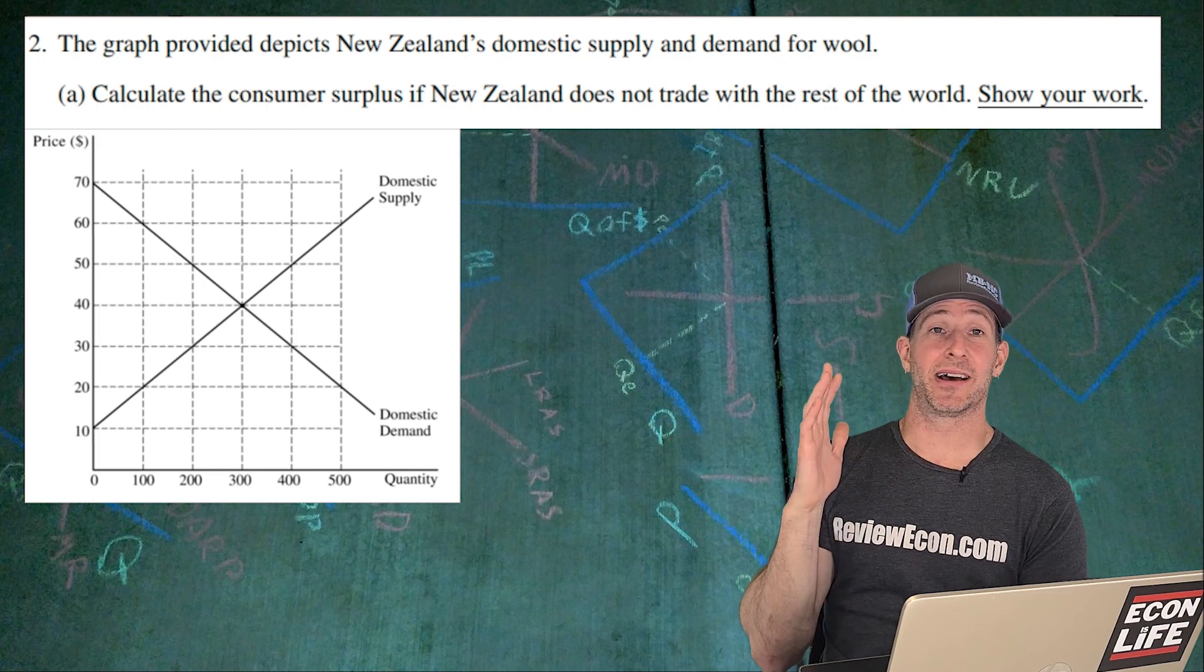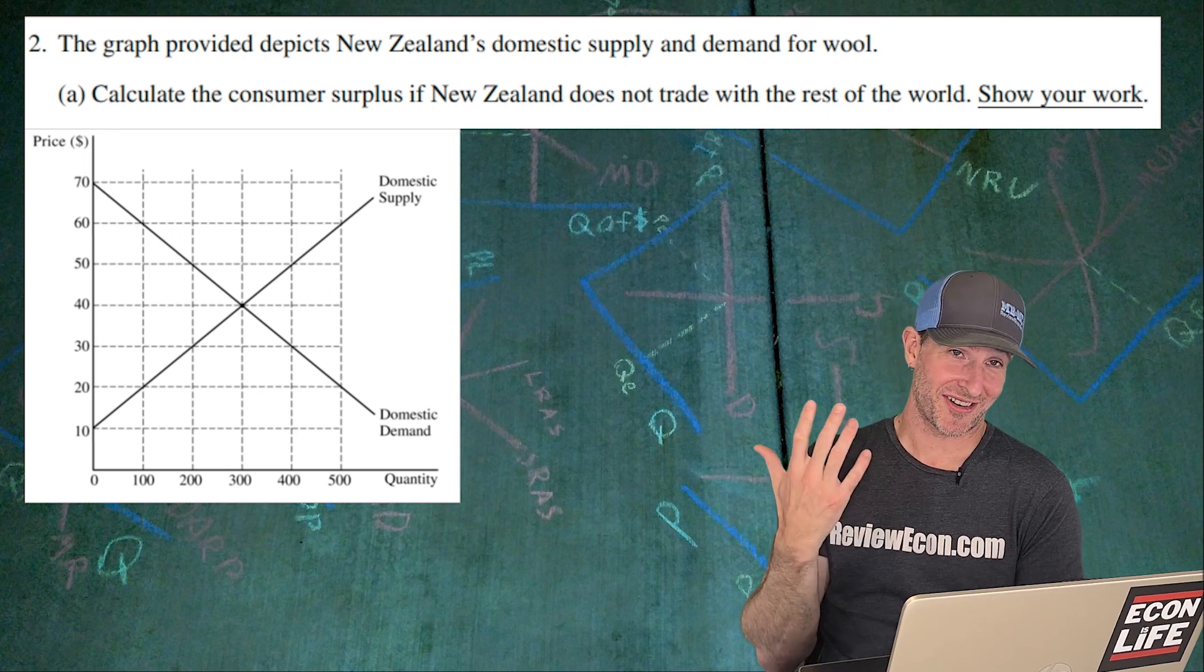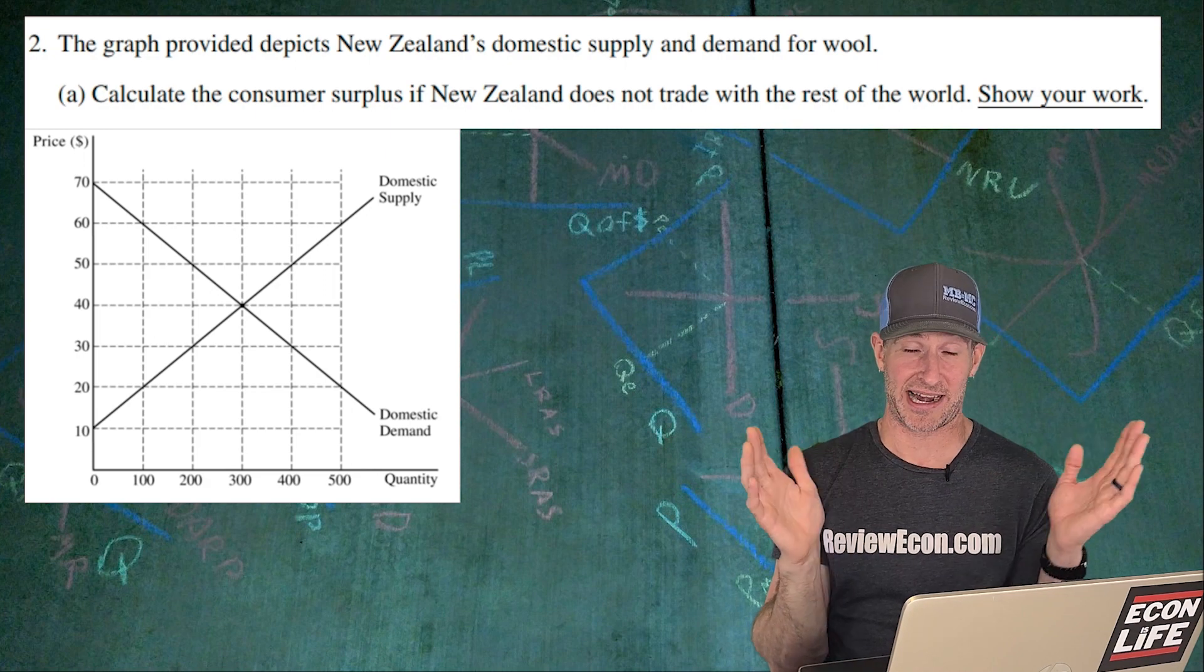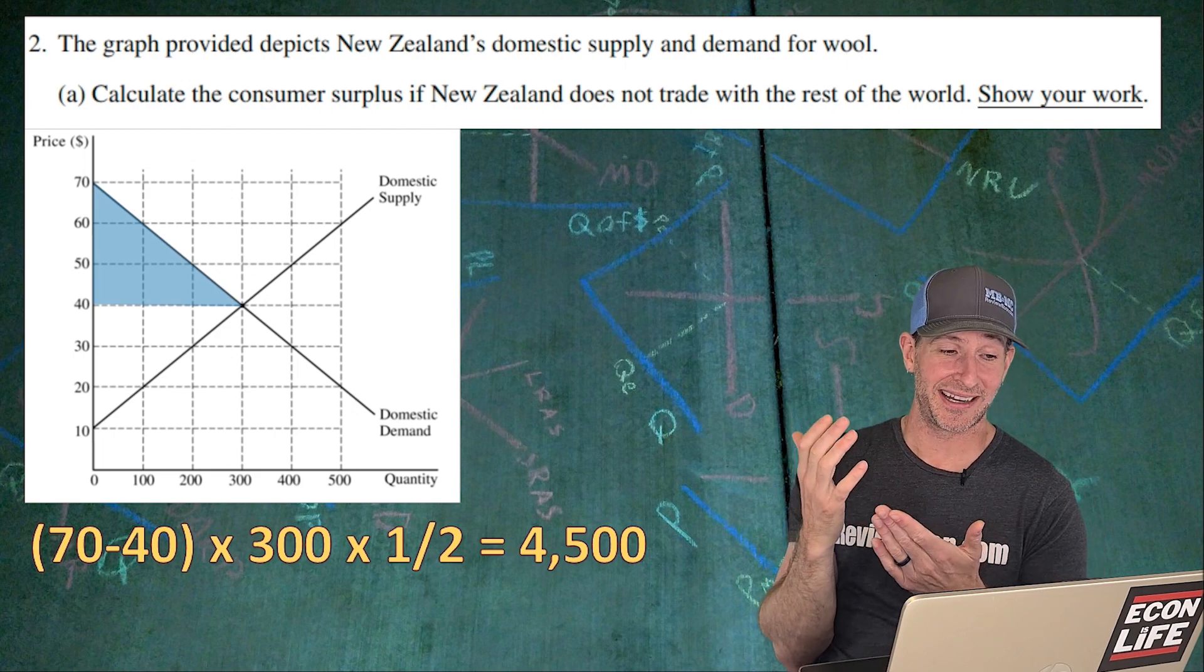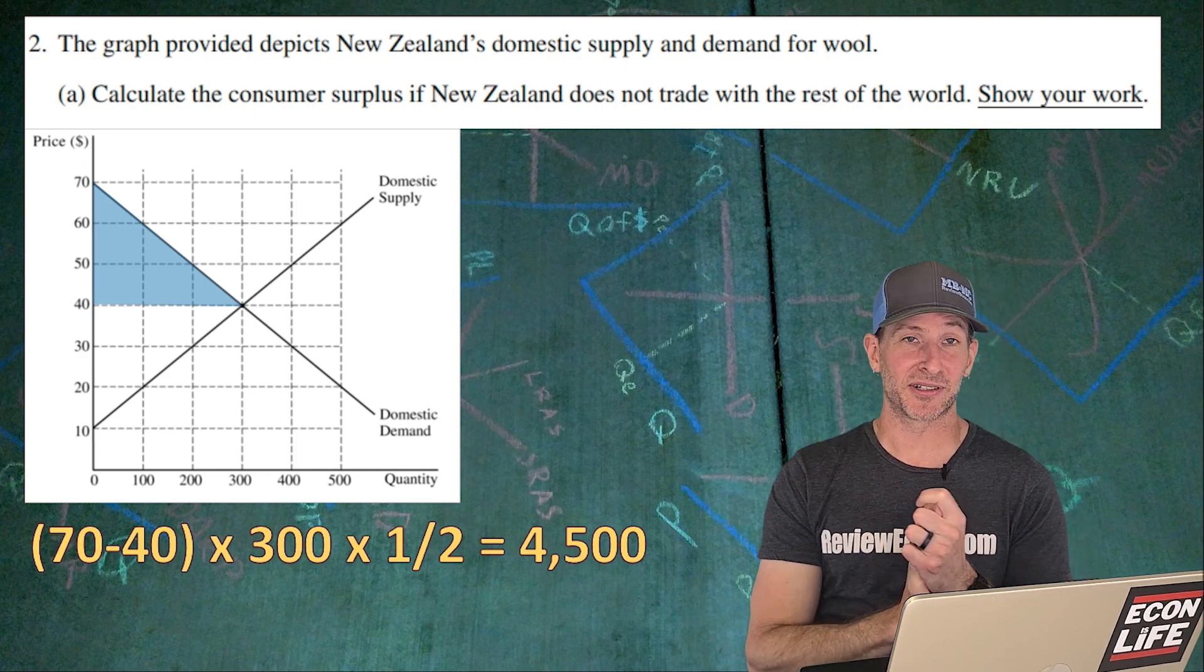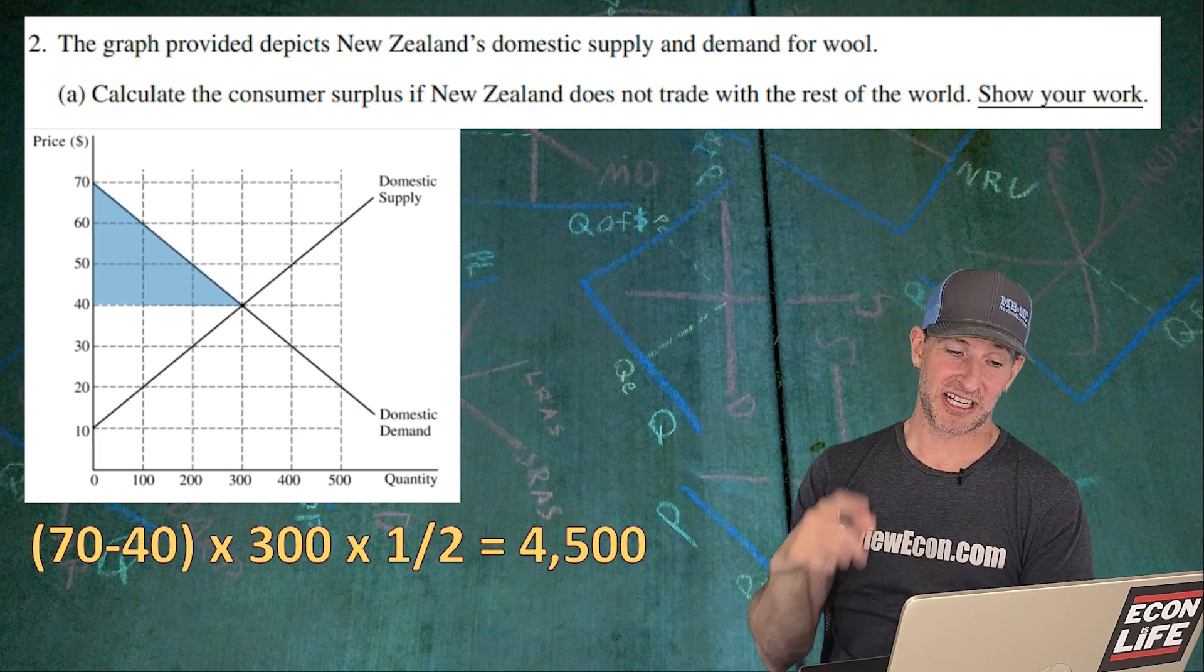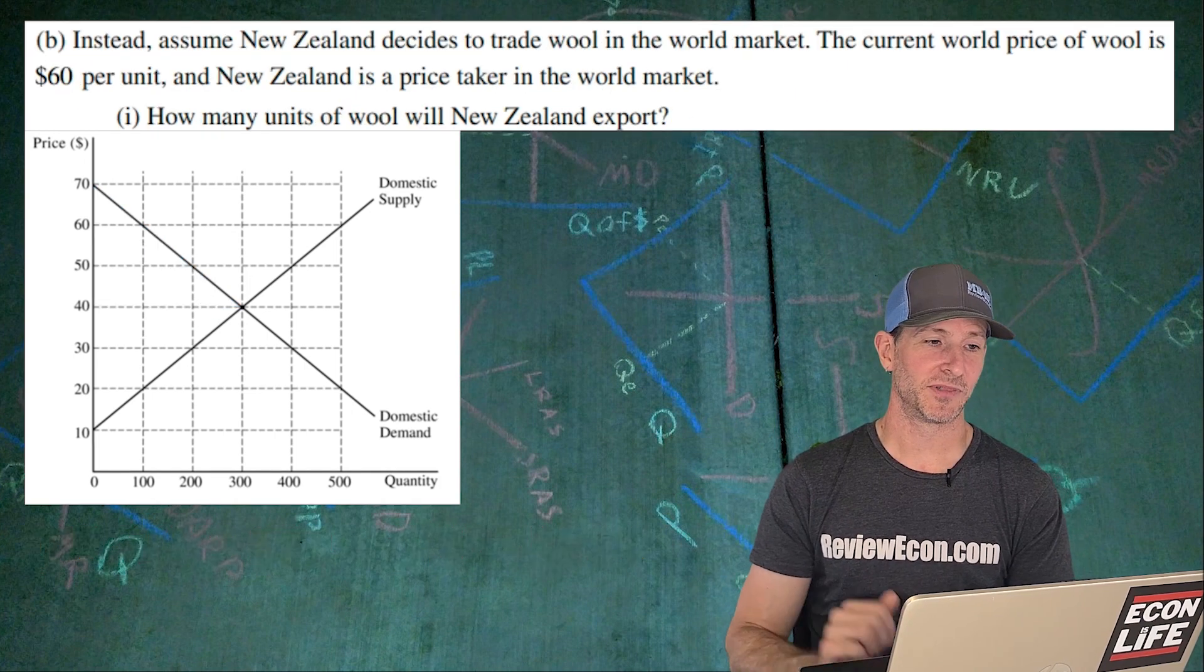On to the next part. D. And this was another curveball here, by the way. Hugely. They've never done anything like this one before. So again, this one was hard for me too, by the way. So we have this graph that depicts New Zealand's domestic supply and demand for wool. We're going to first calculate the consumer surplus if New Zealand doesn't trade at all. So hopefully you got this point. We have our consumer surplus is that triangle right there, the quantity of 300, the price of 40. So you calculate the area of that triangle. It's base times height divided by two. We have a base of 300. We have a height of 70 minus 40, and then multiply that by a half, which gives us 4500 dollars. In this case, dollars is the units here. And we showed our work.